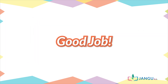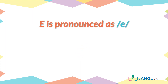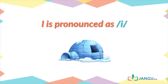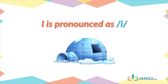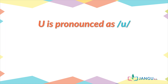Good job! A is pronounced as A, as in apple. E is pronounced as E, as in egg. I is pronounced as E, as in igloo. Let's go on to the next vowel. O is pronounced as O, as in orange. U is pronounced as U, as in under.